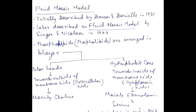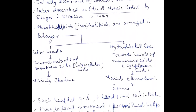Phospholipids are mainly arranged in bilayers. Polar heads are towards the outside of the membrane, that is the extracellular side. The hydrophobic core is present towards the inside, that is towards the cytoplasmic side. Polar heads mainly contain choline-containing phospholipids, and the inner part mainly contains ethanolamine and serine-containing phospholipids. Each leaflet is approximately 25 Angstroms thick, with head and tail 10 Angstroms in thickness. The whole thickness of the Plasma Membrane varies between 50 to 80 Angstroms.